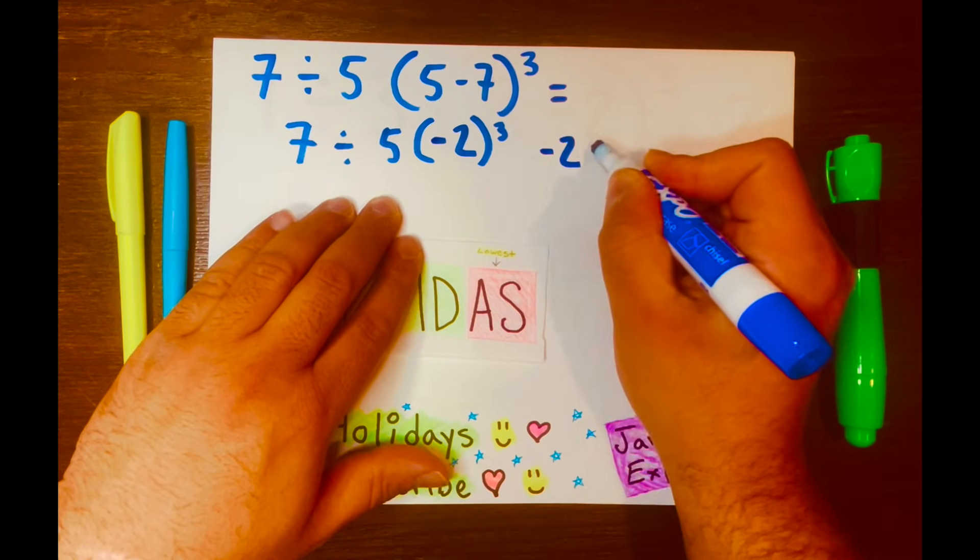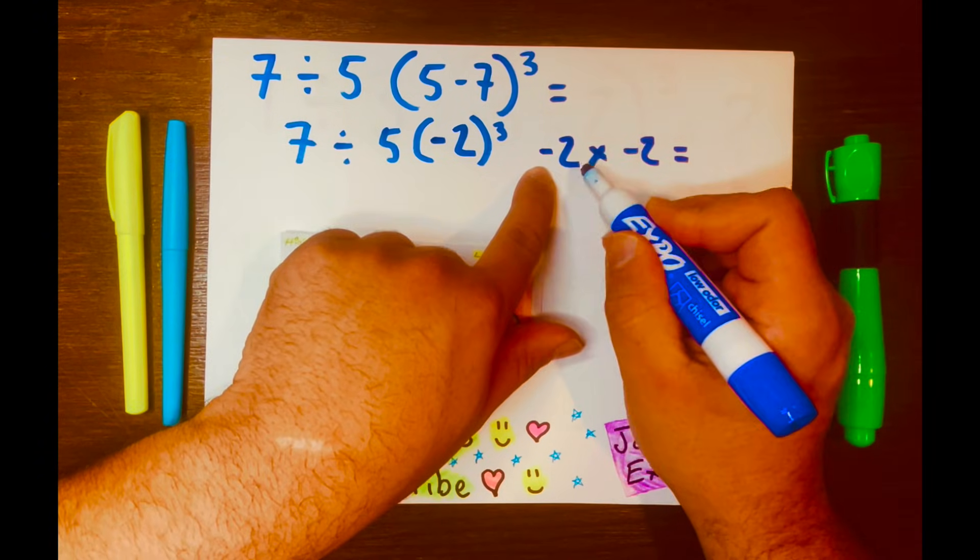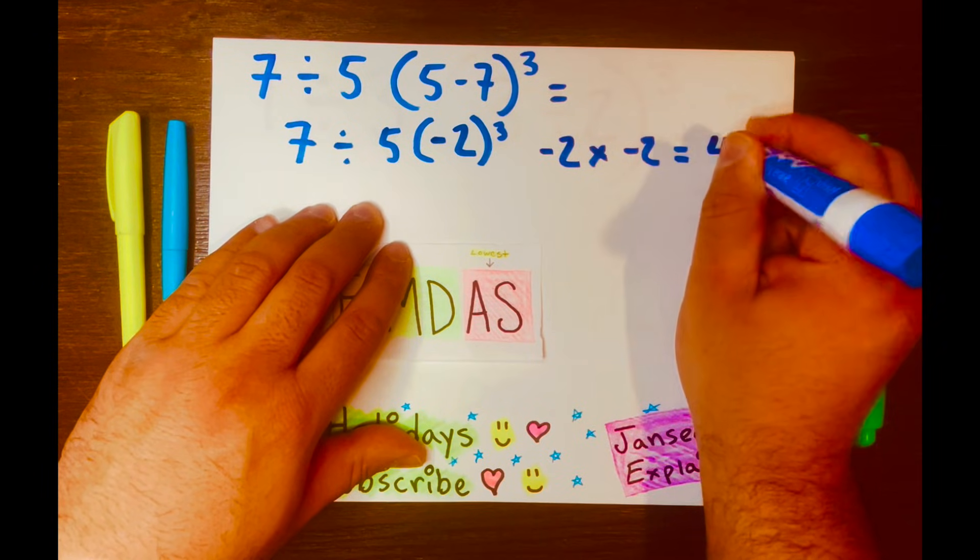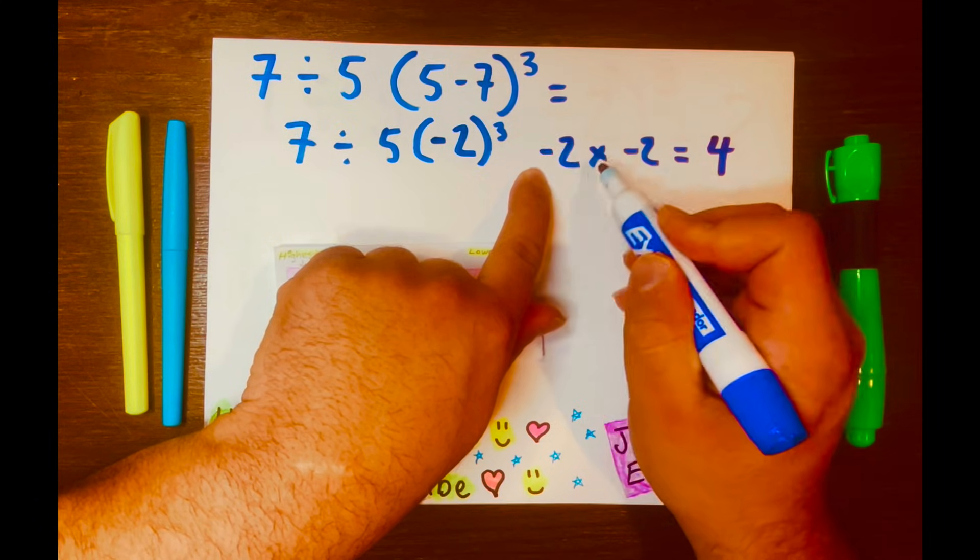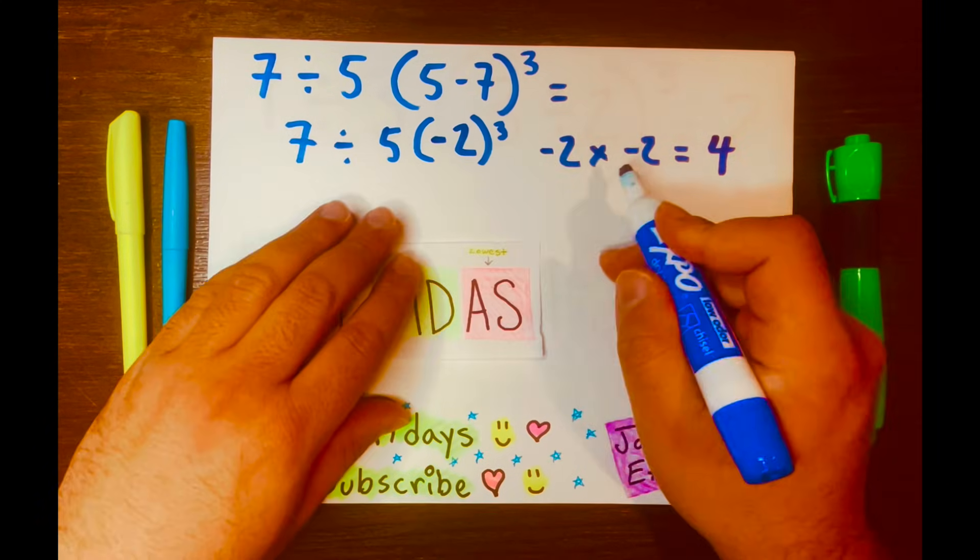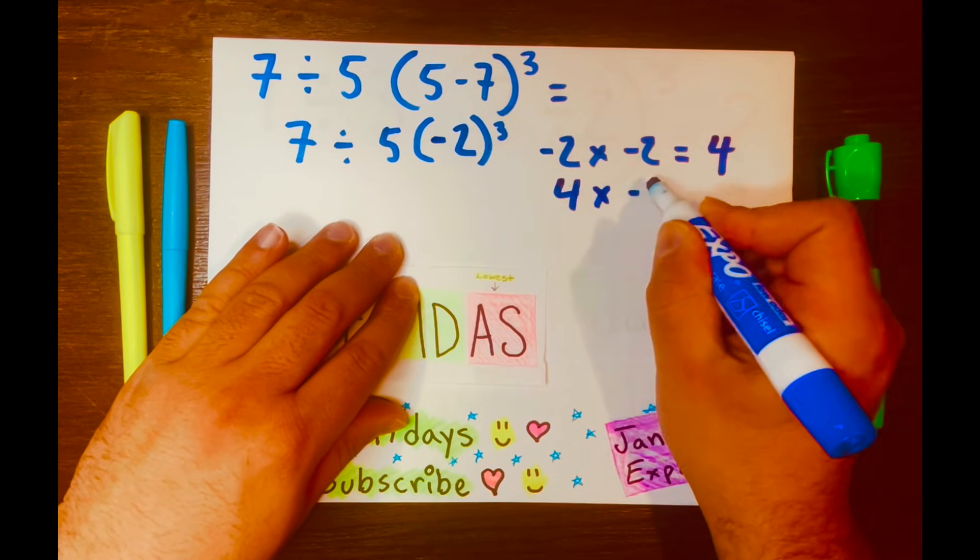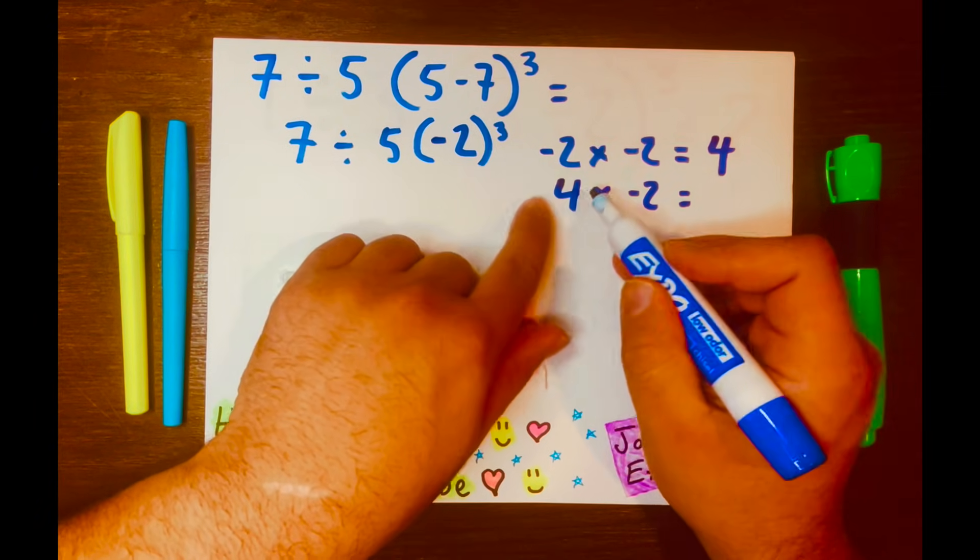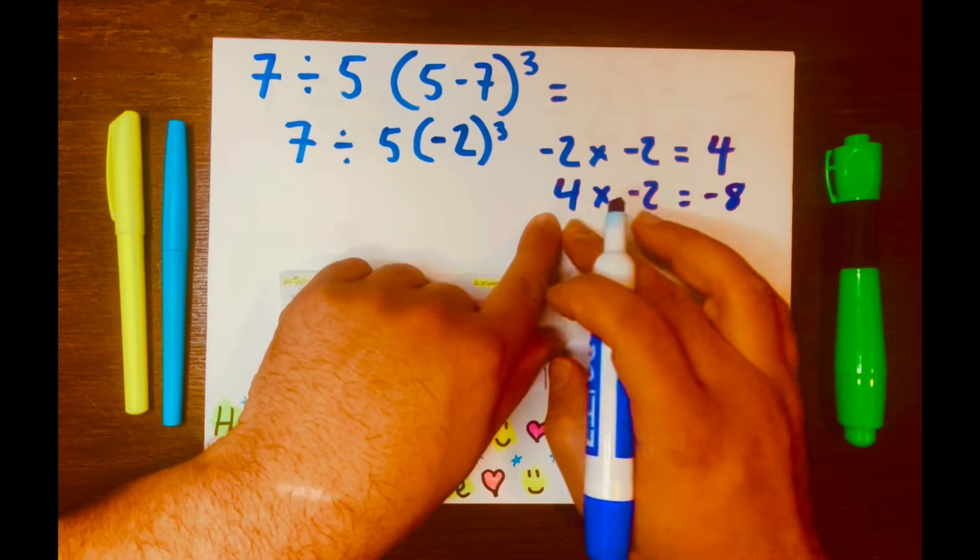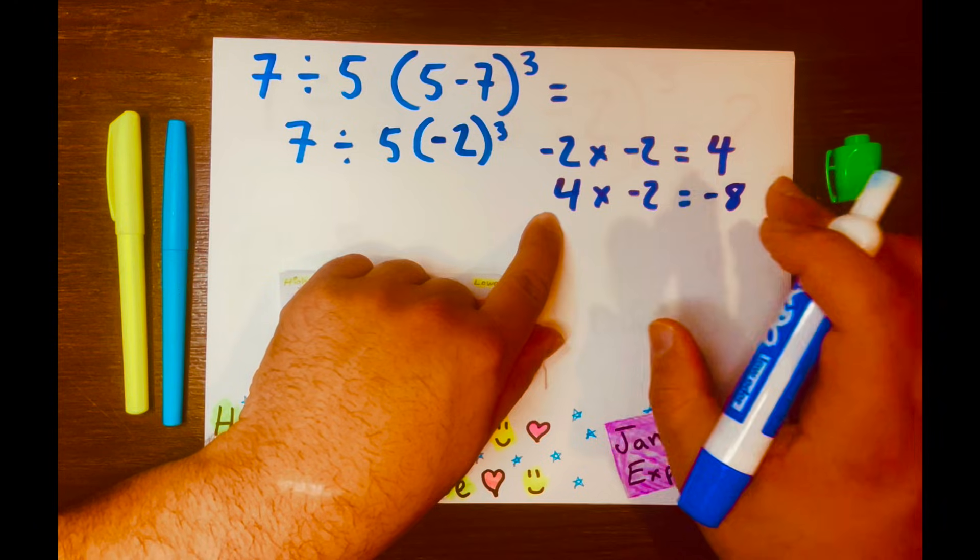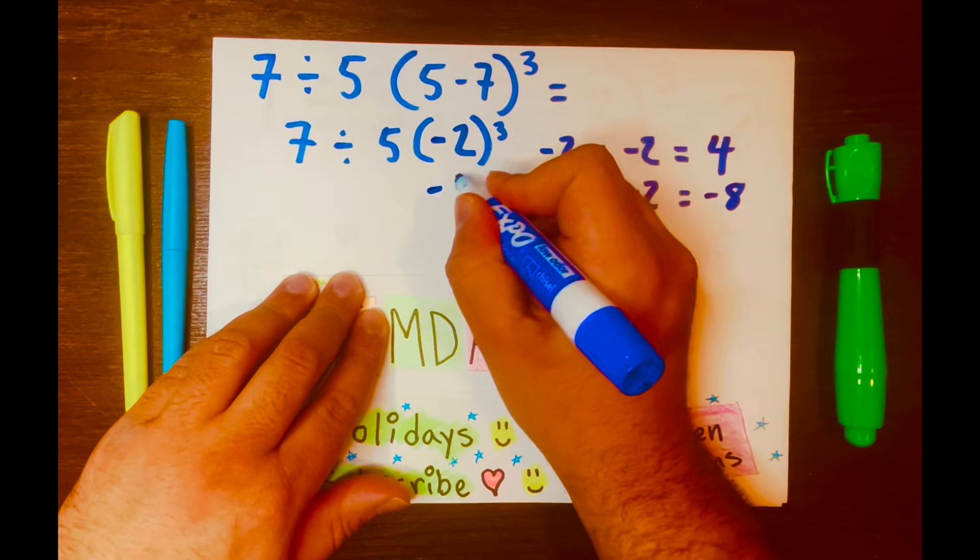This is telling us that we need to multiply negative 2 three times. It'll be negative 2 times negative 2 times negative 2, but let's solve the first two. Negative 2 times negative 2 gives us positive 4, because multiplying a negative times a negative gives us a positive. And then bring down the 4 here times another negative 2. And positive 4 times negative 2 gives us negative 8. We know that a positive times a negative equals a negative, and 4 times 2 is 8. So, the answer is negative 8.